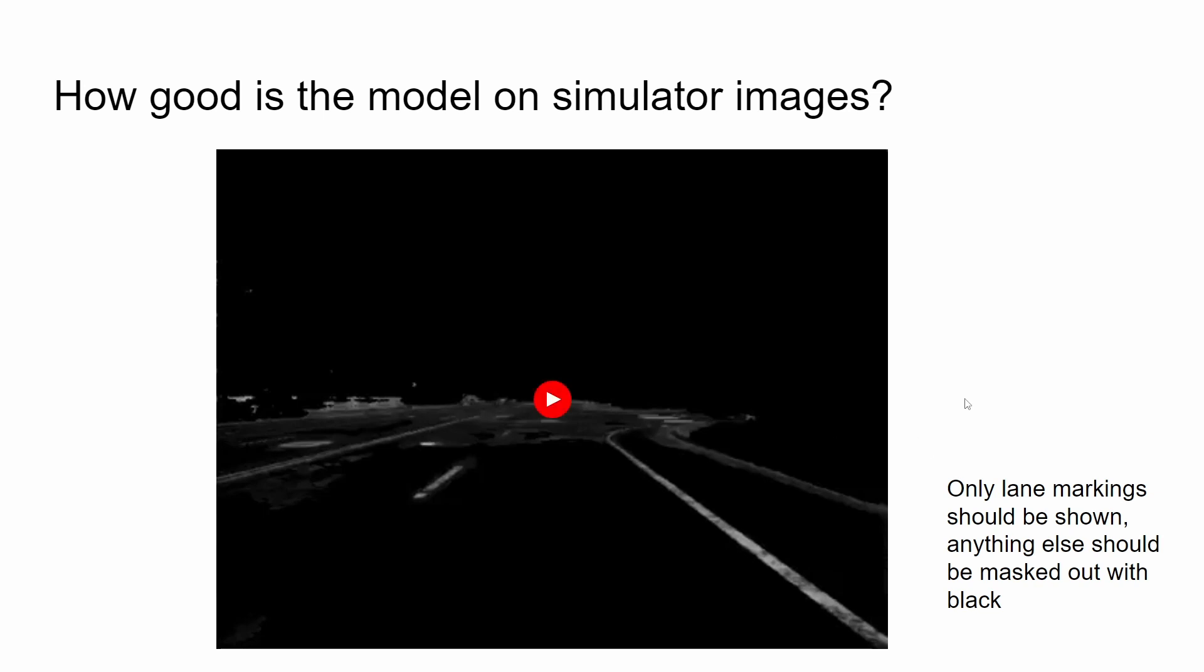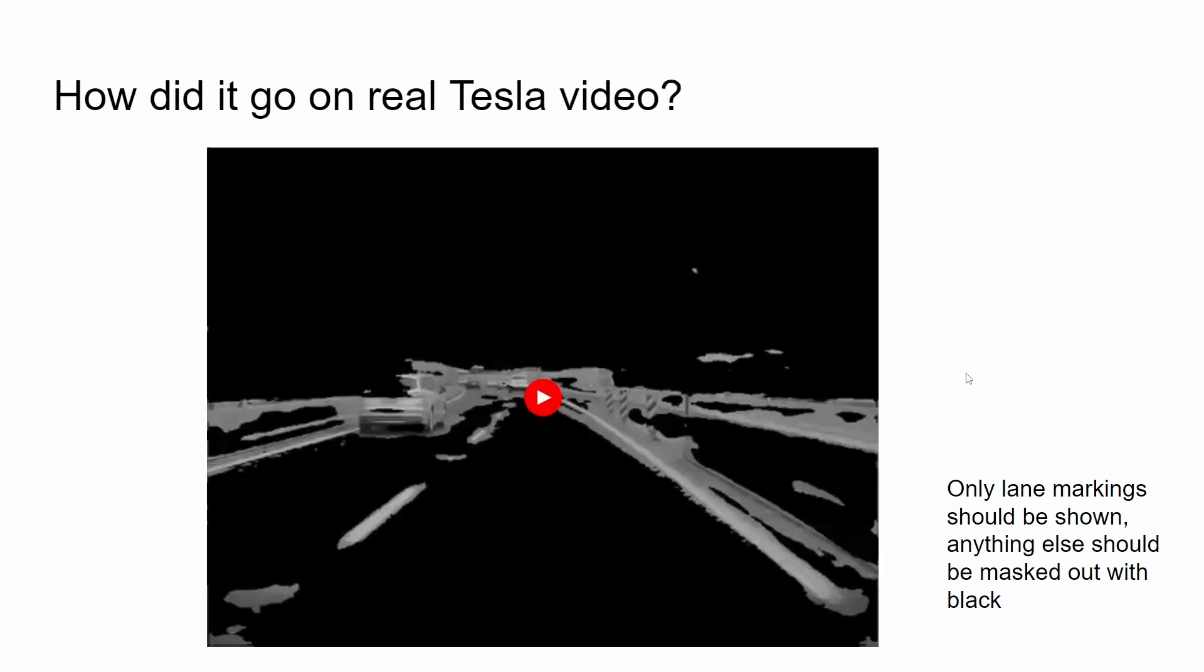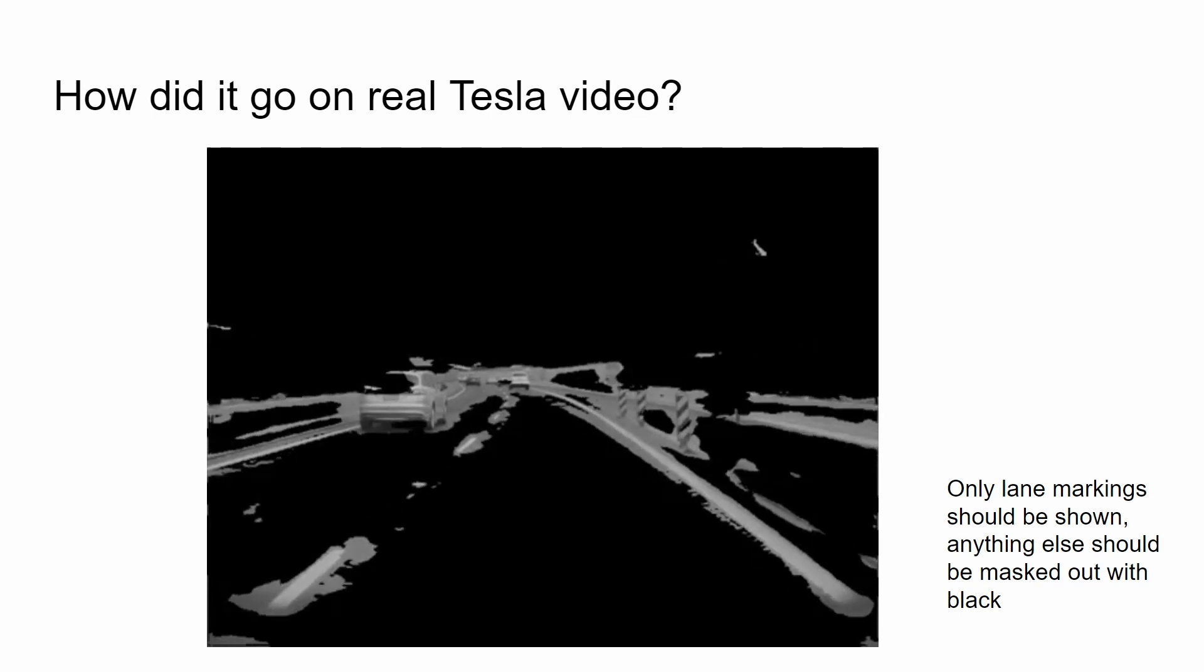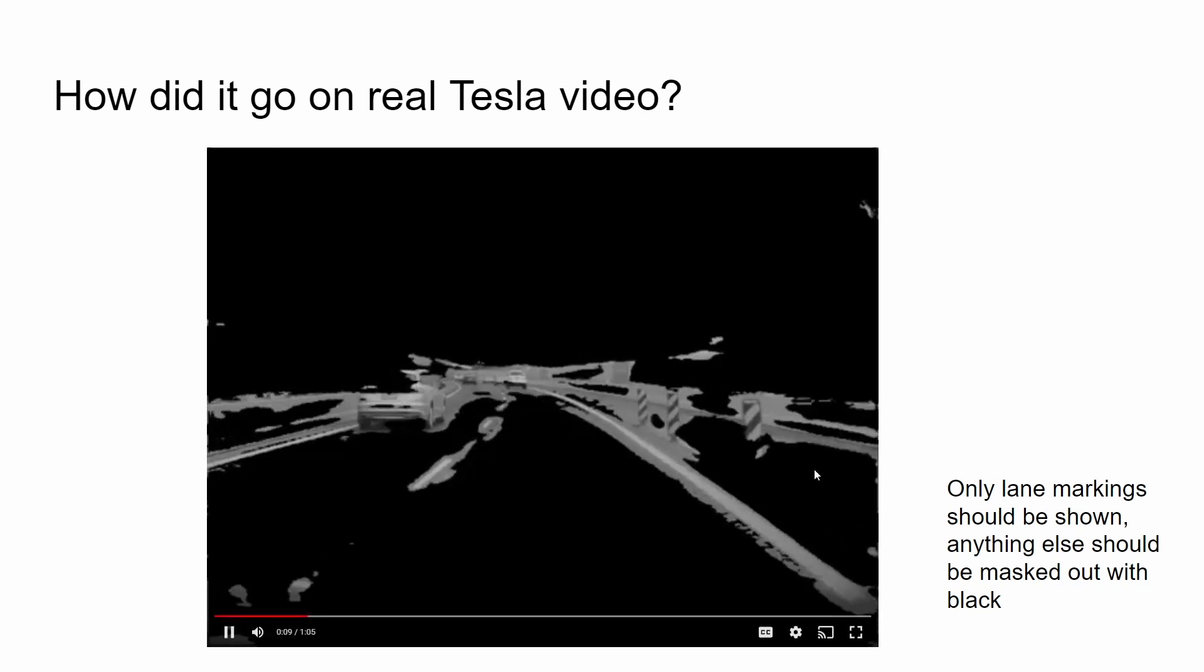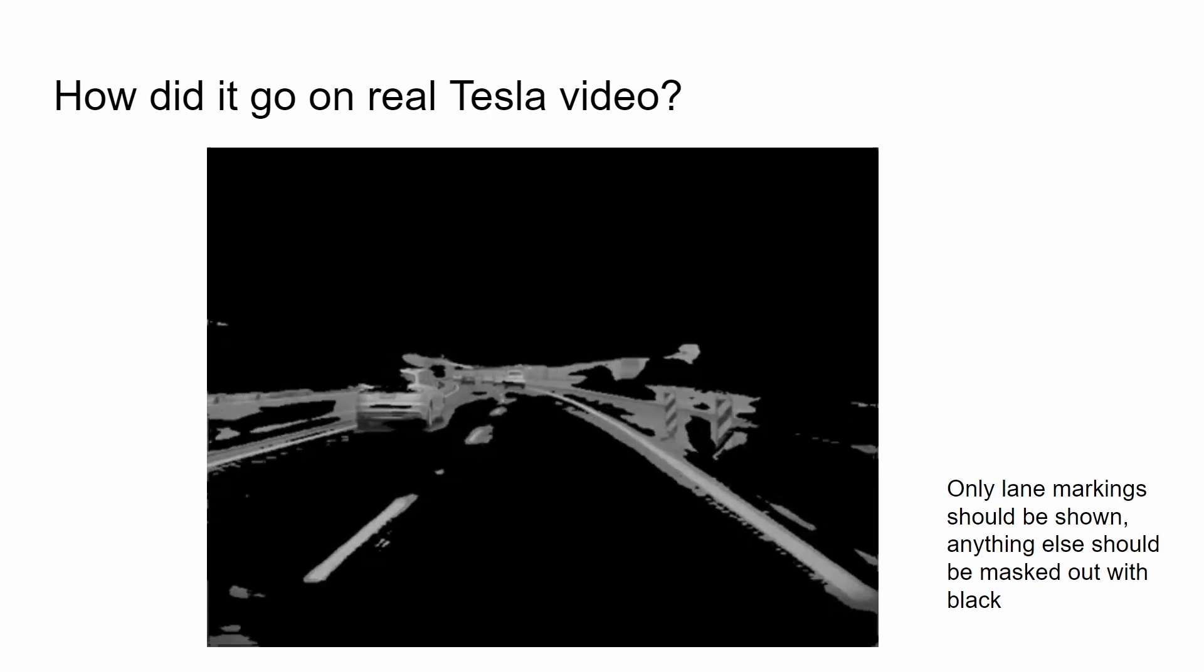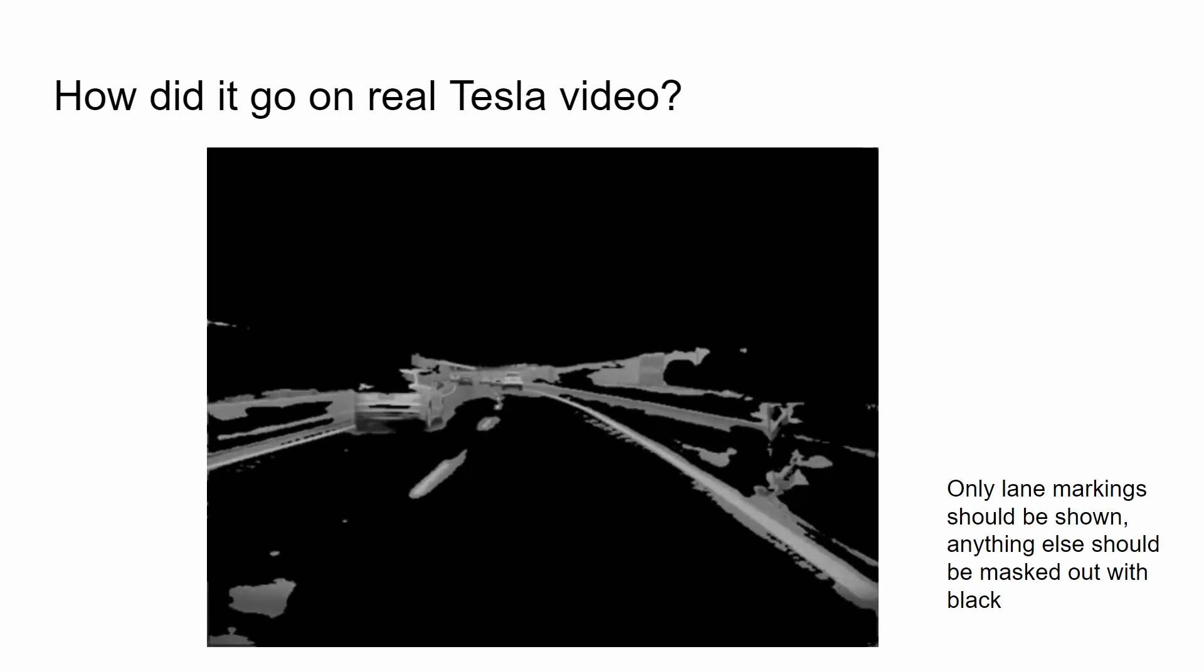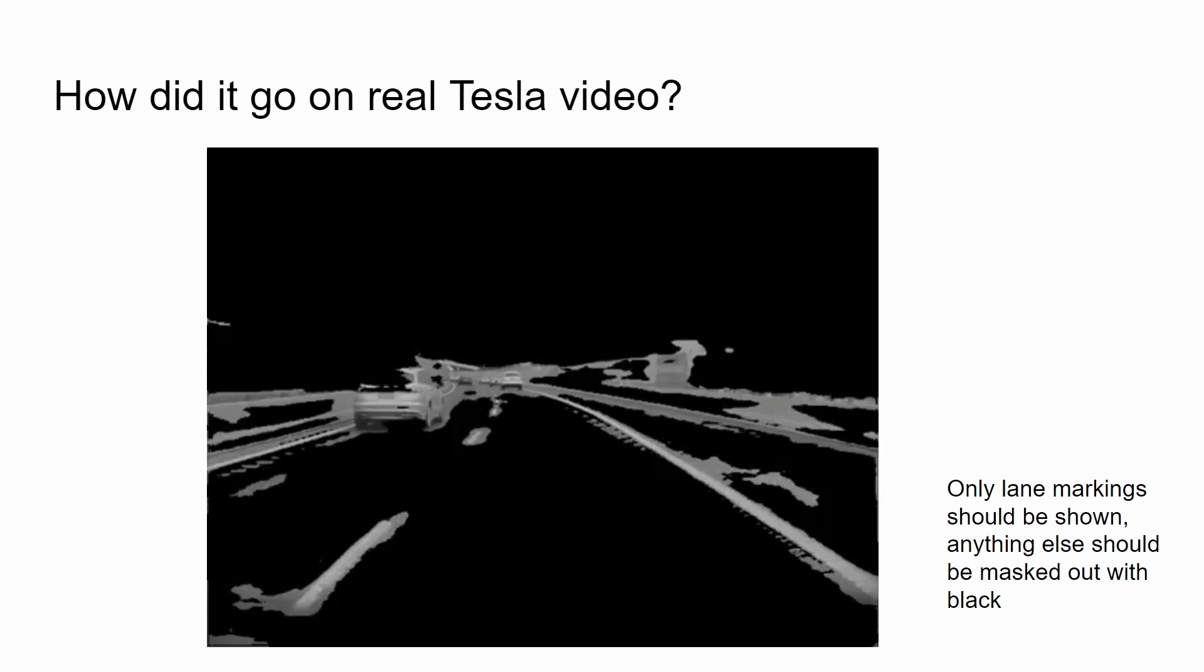Now let's go and look at how the model went on real Tesla footage. And obviously we're not processing it as a video, we're processing it as a frame by frame and making prediction on every single frame. And as you can see, it's already recognizing most of the lane markings but a bit more. And as I said before, the good news that the quality of these predictions are very similar to the quality that you saw on the images generated by the simulator.